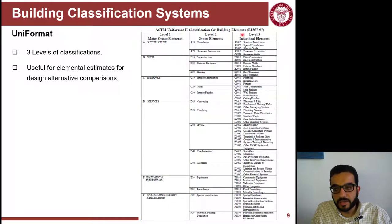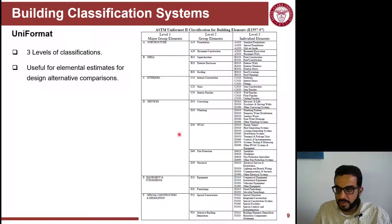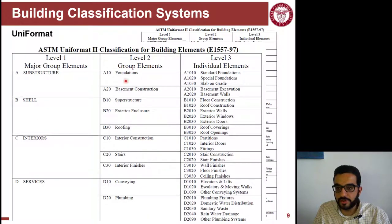Uniformat is simpler — it looks at the building in three levels. The first level has six main divisions: A through F — substructure, shell, interior, services, equipment, and special construction or demo. These are useful when you do estimates based on elements, breaking down the scope based on components or assemblies within the building, not the type of work needed to finish it. For example, substructure — the first division — is broken down into foundation and basement construction. Foundation is further broken into standard, special, and slab on grade.